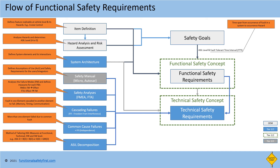Then, TSR needs to consider requirements for ASIL decomposition. ASIL decomposition is a method of tailoring safety requirements when they cannot be implemented at the original ASIL level due to some constraints. In simple terms, this has two broad categories: one is a QM requirement plus a safety mechanism at the original ASIL level, and the second is a redundant implementation of safety requirements at a lower ASIL level.